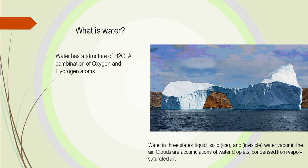Water can be seen in three different states here on Earth. We have the solid, which is ice — an iceberg floating right here. We have the liquid, the ocean that it's floating in, and the invisible water vapor that goes up into the clouds. Clouds are just an accumulation of water droplets condensed from vapor-saturated air.